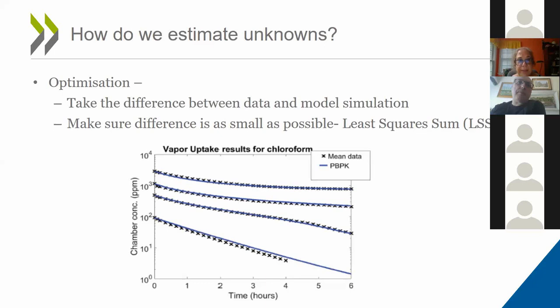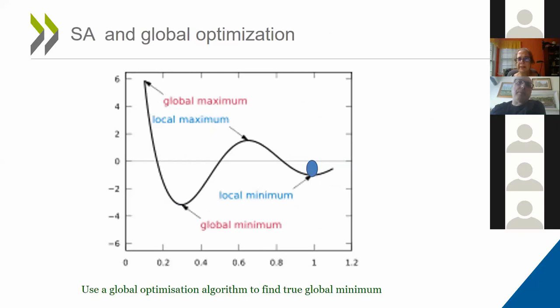Sometimes this optimization process can be complex. I've shown a graphical example of a surface that has multiple peaks and valleys. In this case, the algorithm can get stuck on the wrong valley and give us an answer that is not optimal — it should have found the global minimum instead, which would give a better answer.